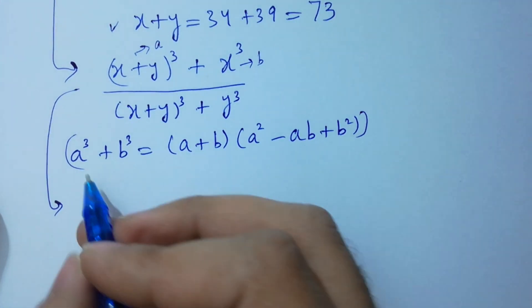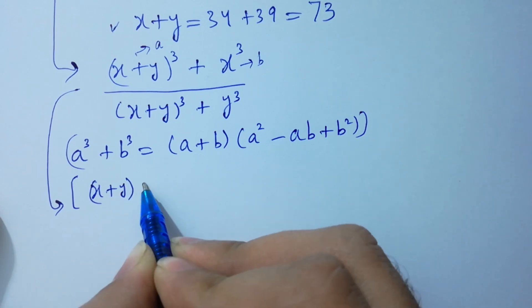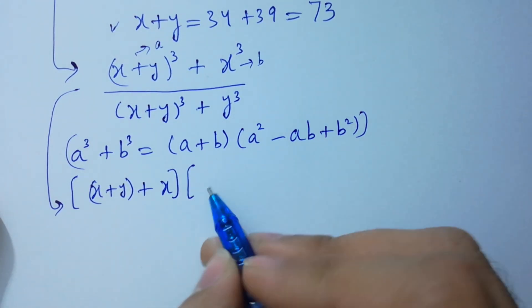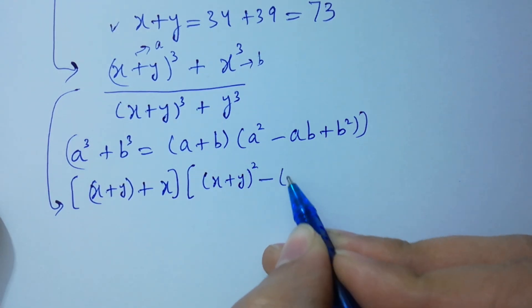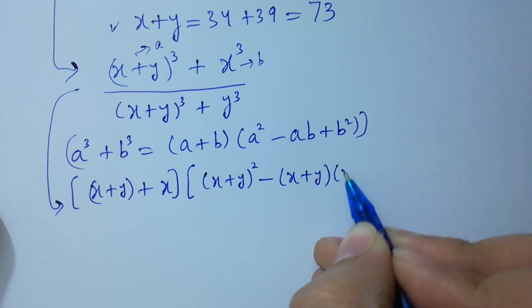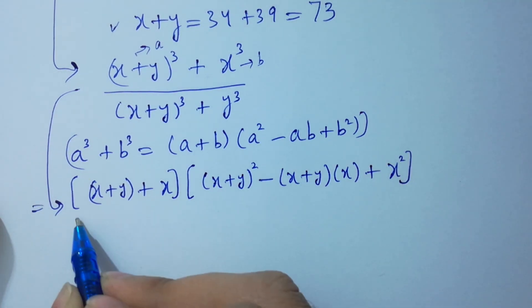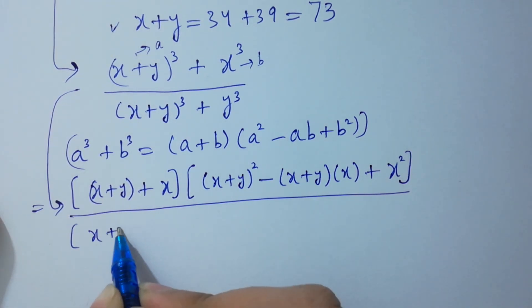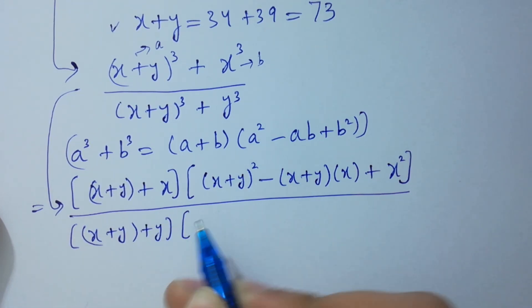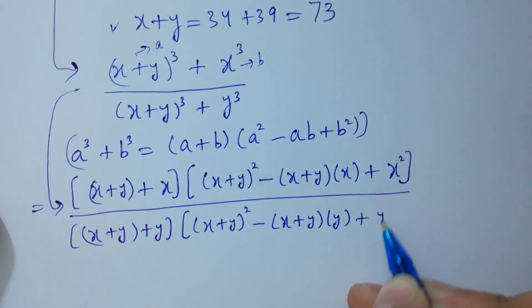So we have here x plus y is a and x is b. We have x plus y plus x, times x plus y whole square minus x plus y times x plus x square. And here in the denominator, we have x plus y plus y, times x plus y whole square minus x plus y times y plus y square.